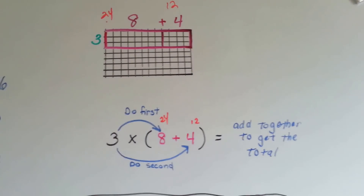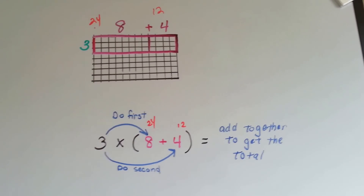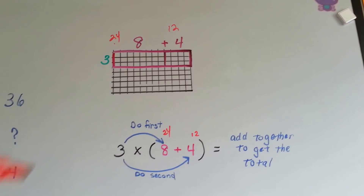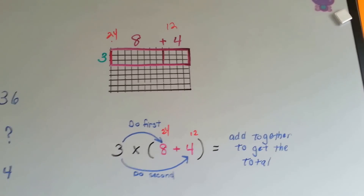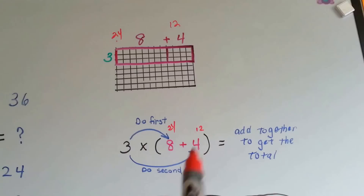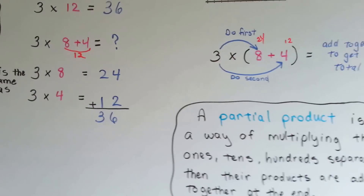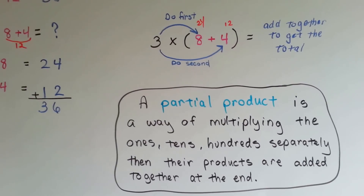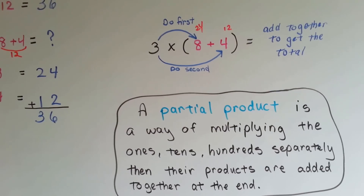And then you get the total at the end, and you have distributed the 3 to each one of them. To distribute means to pass out or hand out — like if you distribute papers in the classroom. So you hand the 3 to each one of these and then you add them up. When you see parentheses in an equation, you always do what's inside the parentheses first, then you do your multiplication or division.